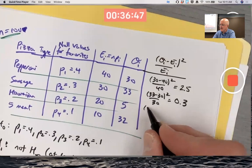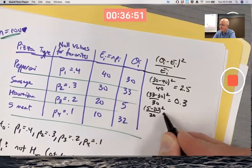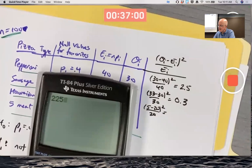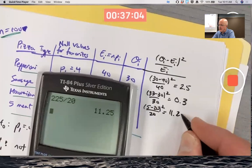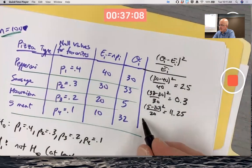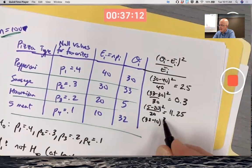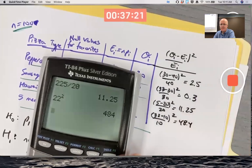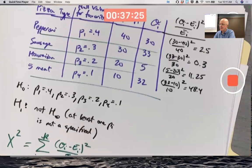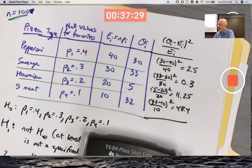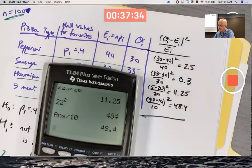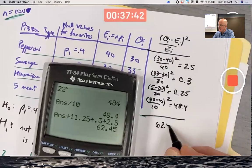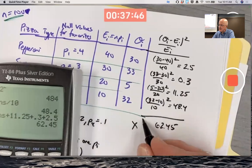This next one's going to be fairly big: 5 minus 20 squared over 20. 15 squared is 225 divided by 20, going to get something over 10 here, it's going to be an extreme one, 11.25. And then this one's going to be extreme as well: 32 minus 10 squared over 10, 22 squared over 10, will be 48.4. So yeah, the sum of these things is going to be pretty big. We're going to get a pretty extreme observed value of chi-squared. At least it seems that way. The number of degrees of freedom is certainly going to affect the p-value. 62.45 is the observed value of chi-squared for these data.